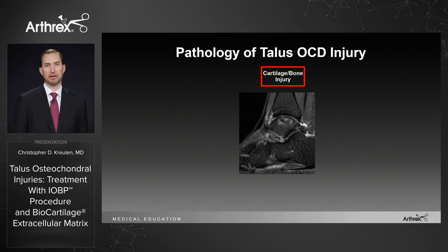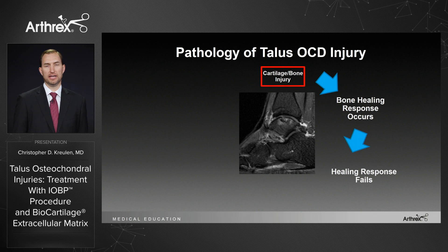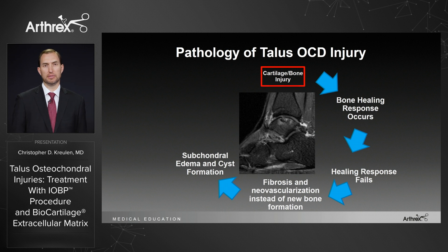Now let's review the pathology of a talus osteochondral injury. The injury occurs to the bone and the cartilage and a normal healing response occurs. Sometimes this response fails and you start to get fibrosis and neovascularization instead of new bone formation. Over time, this leads to subchondral edema and cyst formation.